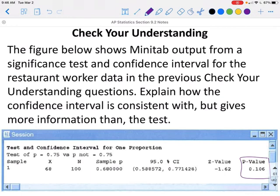On our test we got a P value of 0.106. Now our alpha level that we tested this with was 0.05, so we failed to reject the null hypothesis, which stated that our P value, or P sub 0 value, was 75%. Now if we look at our interval, it goes from 0.588 to 0.771. As you can see, 0.75 does fall between those values, so it does make sense that we would fail to reject the null hypothesis because it is possible, based on our interval, that it would be 75%.